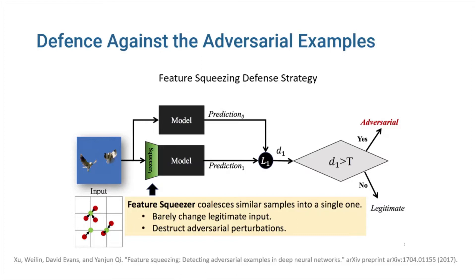The utilization of an ensemble of models for classification is another defensive tactic. For example, in the feature squeezing defense strategy, we reduce the amount of features by compressing them, and feed the squeezed input to a second classifier, in addition to the standard model that classifies the raw input. If the prediction of the second classifier differs significantly from the prediction of the first classifier, we infer that the input was an adversarial attack.